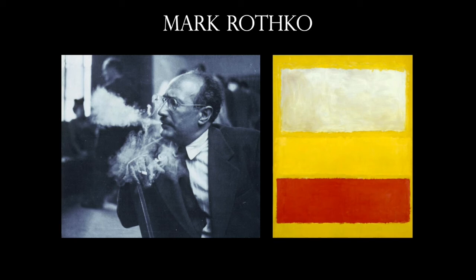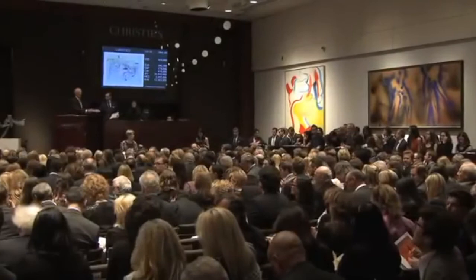Mark Rothko creates very non-objective paintings that he considers landscape scenes. It is amazing how expensive they are when sold at auction. Sadly, he committed suicide around 1970–1971; his studio assistant found him in his studio. His paintings shifted from very bright colors to much darker colors right before his death. Let's watch a quick auction clip of a Rothko selling.